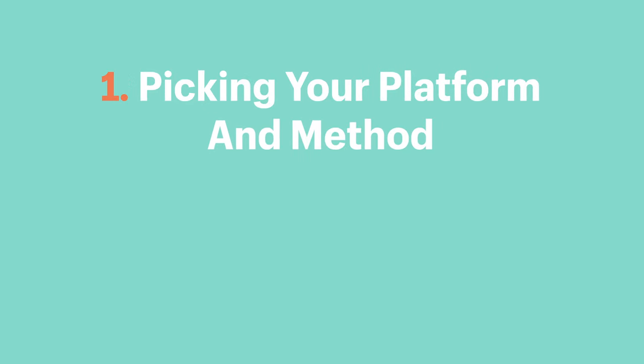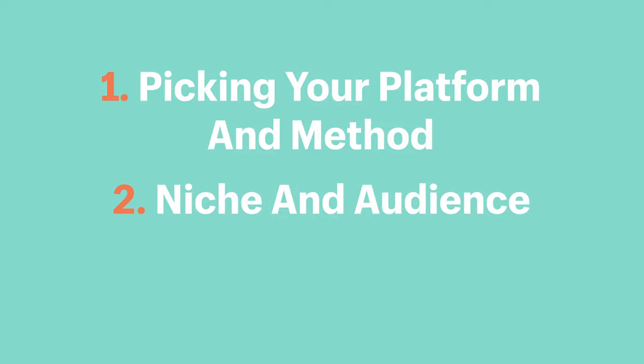Just like running your own business, becoming a successful affiliate takes dedication and discipline. Ideas alone won't cut it — having a strategy and executing it is crucial for making top earnings. We're going to get you started by focusing on three important components: picking your platform and method, deciding on a niche and figuring out your audience, and deciding on a product. To be effective at affiliate marketing, you'll need to create an audience around your niche.